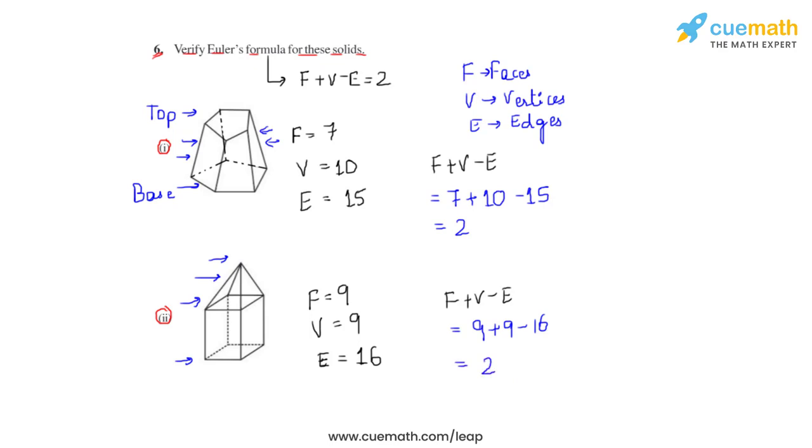Hence, we can say that we have verified Euler's formula for the second solid as well, because we are getting 2 on the right hand side, which verifies Euler's formula. And this is how we are going to answer the sixth question of this exercise.